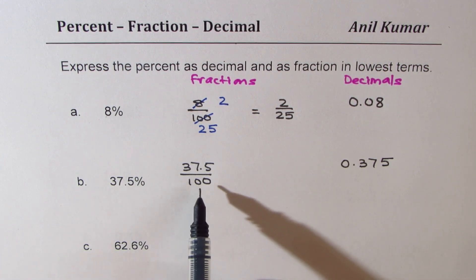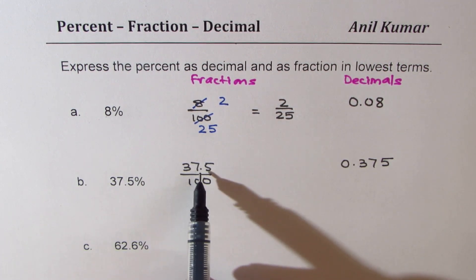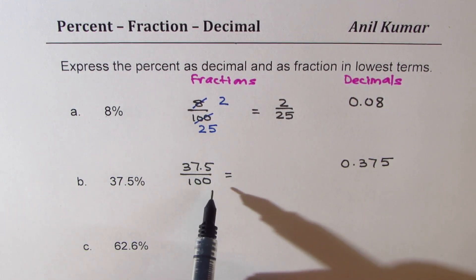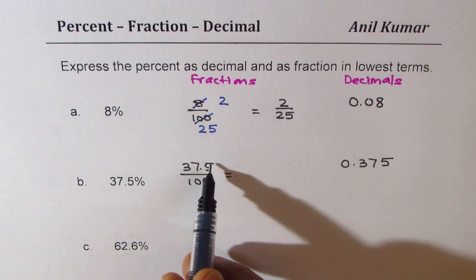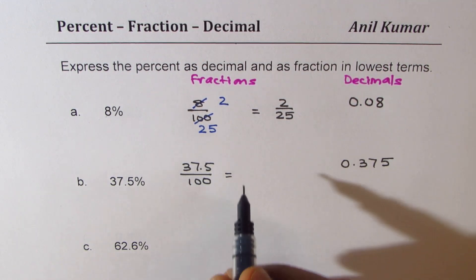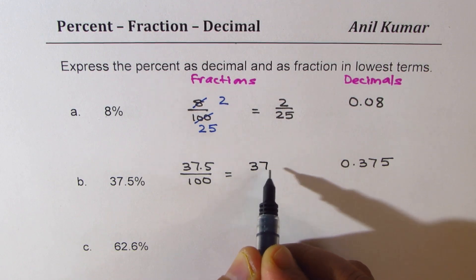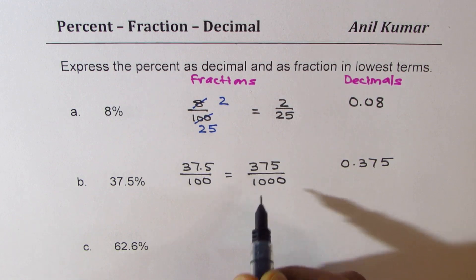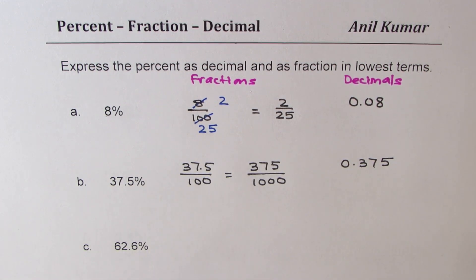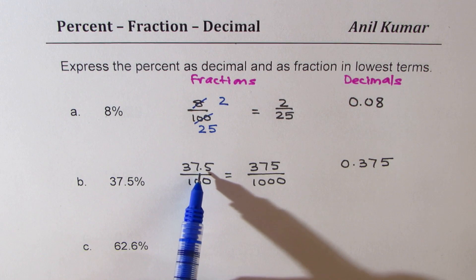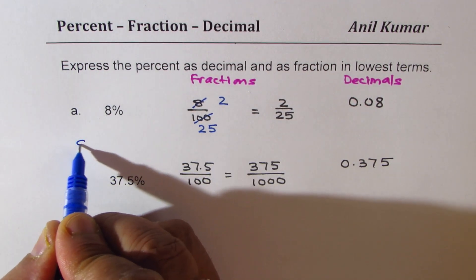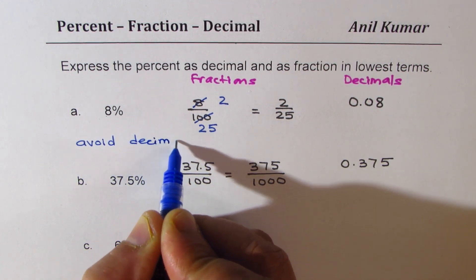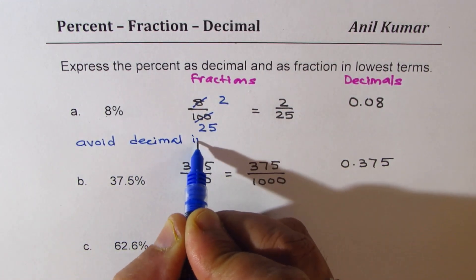Now let us simplify this. Here we already have a decimal, so the first step should be to avoid this decimal. That means we have to multiply both numerator and denominator by 10. The key here is to avoid a decimal in the numerator.